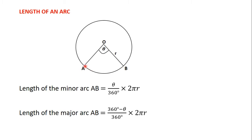The length of the minor arc AB is given by theta — which is the angle between the two radii — divided by 360 degrees, times 2πr. The length of the major arc AB is given by 360 degrees minus theta, divided by 360 degrees, times 2πr.